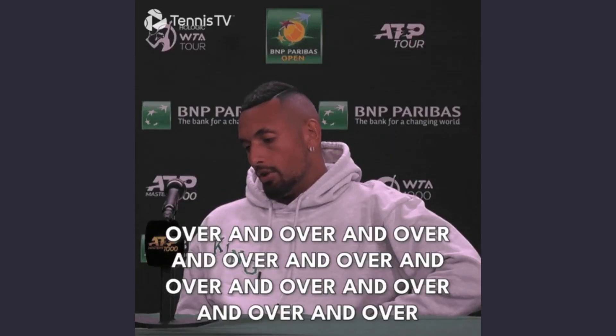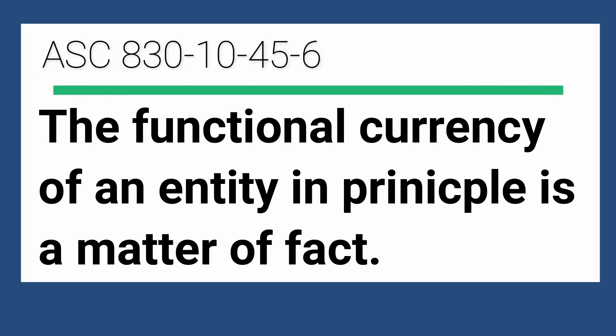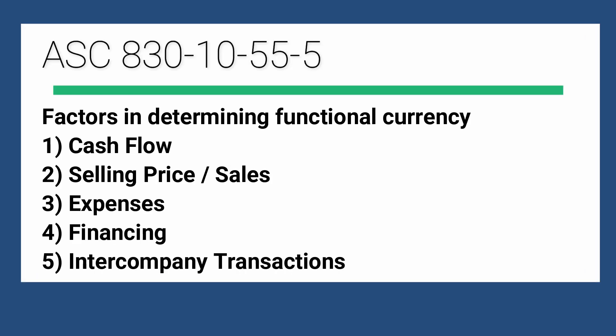Those definitions are going to come in handy because I'm going to reference functional currency and reporting currency a lot. From FASB's standpoint, functional currency is a matter of fact. They're going to go through criteria and look at: What are you holding your cash in? What are the cash flows coming in? What type of currency are you selling in, paying your expenses in, interacting with intercompany transactions in, and financing in? It should be very obvious what the functional currency is when you're determining it.